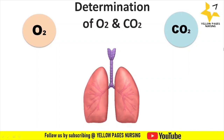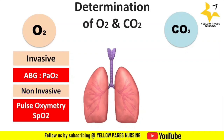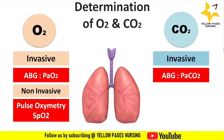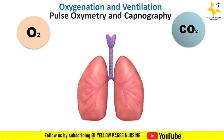In determining oxygenation status, arterial blood gas analysis determines the partial pressure of oxygen invasively, while pulse oximetry determines the SpO2 level non-invasively. In determining ventilation status, arterial blood gas analysis determines the partial pressure of carbon dioxide invasively, and non-invasively capnography determines the EtCO2 level, measured breath by breath at the end of the expiratory phase.